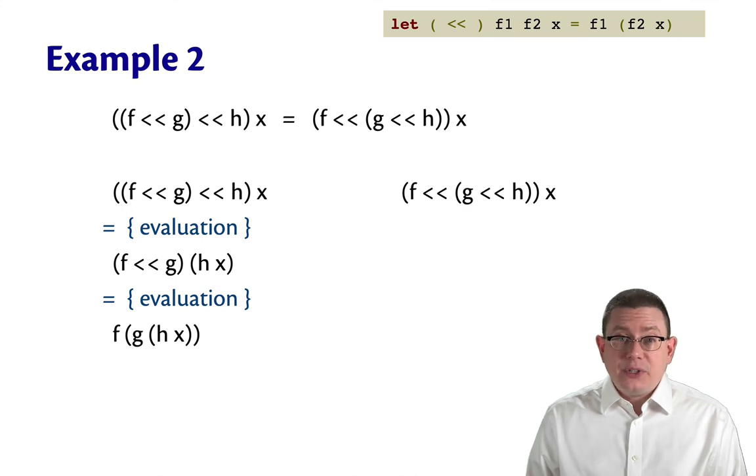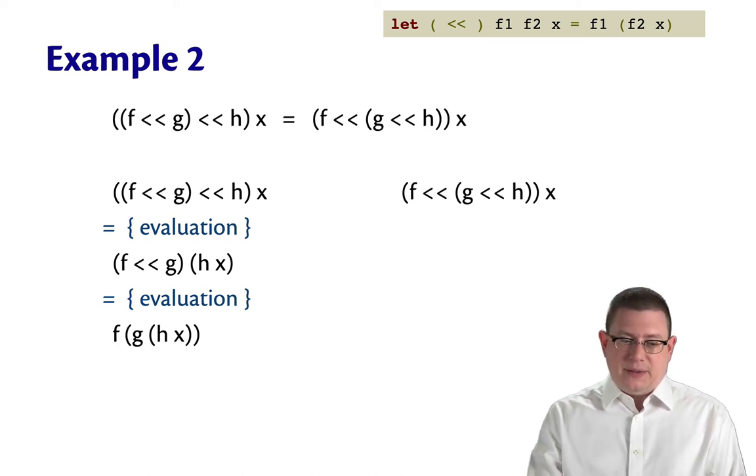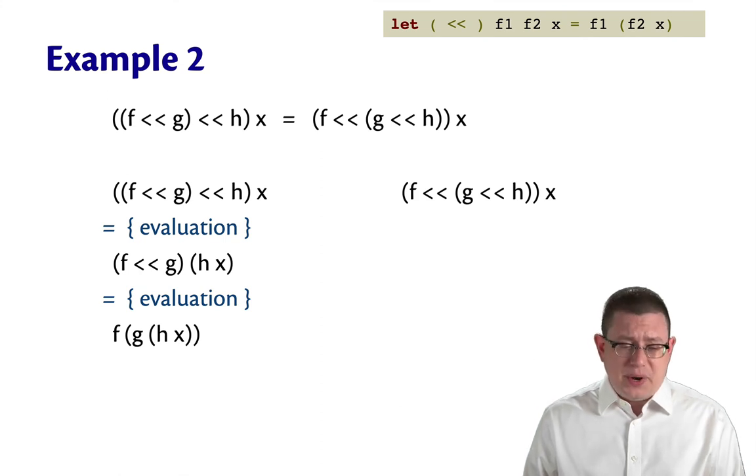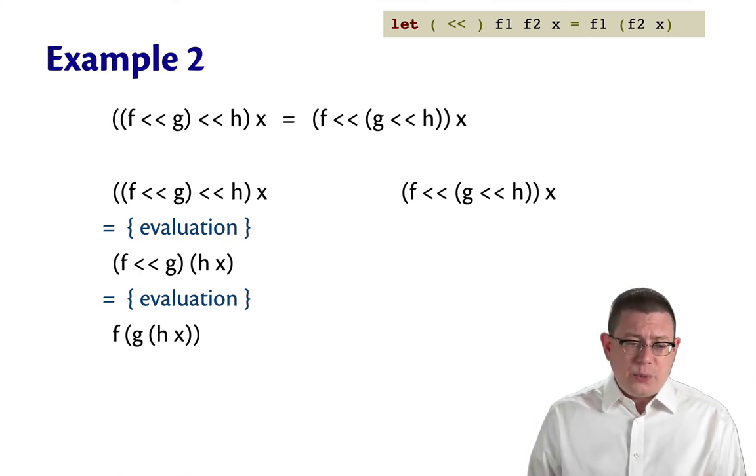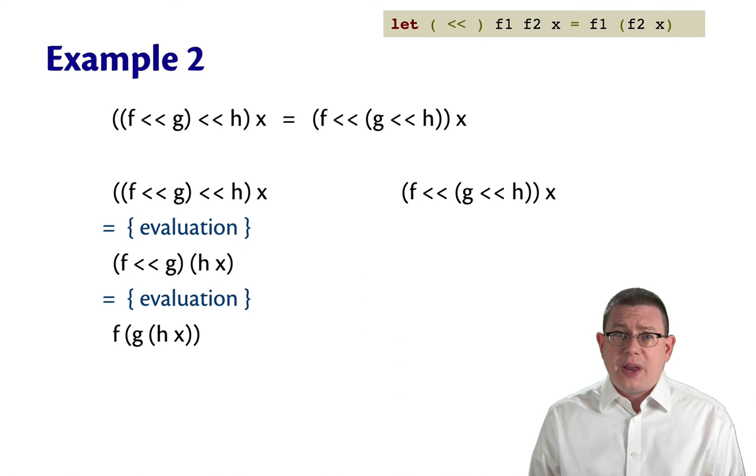From that, I could take another step of evaluation, because I know what compose is going to do here. It's going to apply g to the result of h x, and then apply f to that. Now I'm kind of stuck at that point. There's nothing further I know about how to evaluate that expression, because I don't know what f, g, or h are. I don't even know what x is.